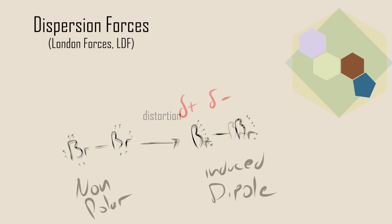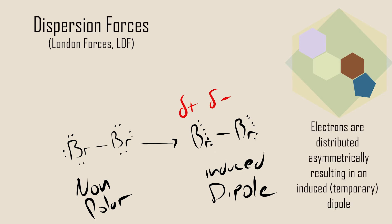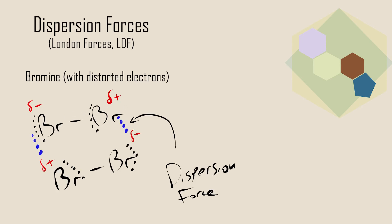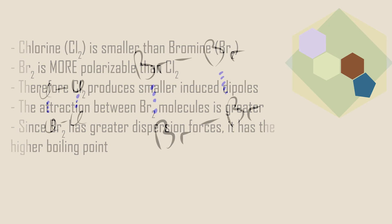But at any instant, a momentary distortion may cause some electrons to be unevenly distributed around the molecule, causing a temporary or instantaneous dipole. When molecules of bromine come into close contact with one another, the resulting attraction between them is called dispersion forces. The larger and more polarizable a particle, the larger the magnitude of the dispersion forces. Hence, molecular bromine exists as a liquid at room temperature, whereas chlorine exists as a gas. Bromine is larger and more polarizable, so the dispersion forces that exist between Br2 molecules is greater compared to the smaller, less polarizable Cl2.